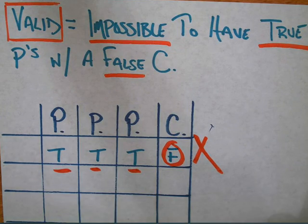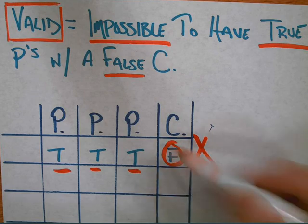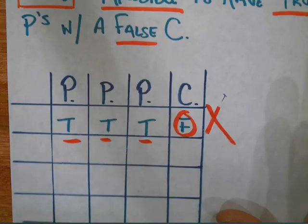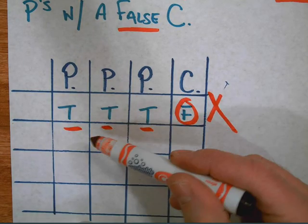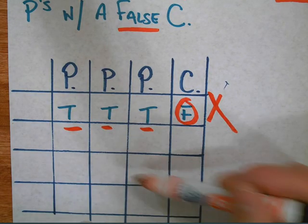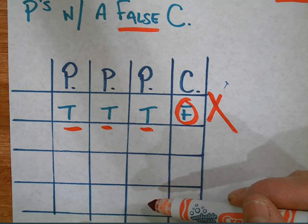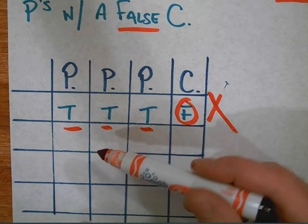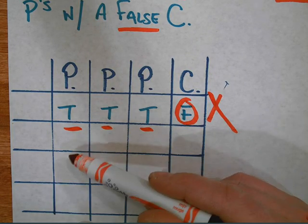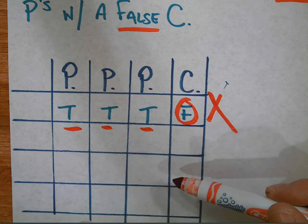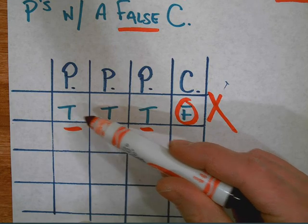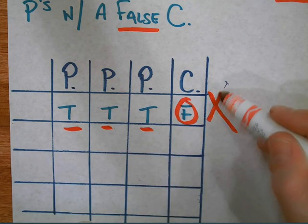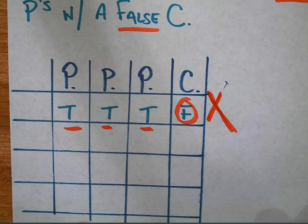So to just wrap up here, basically what we're looking for when we're testing an argument is we're testing to see if there's any possible situation. Remember, the whole point of a truth table is to set up the rows so that we see all the possible scenarios with the different sentence letters, to see if there's any possible scenario where we have all true premises and a false conclusion. The moment that you see it's possible for the premises to be true and the conclusion false, automatically you know that the argument is invalid.